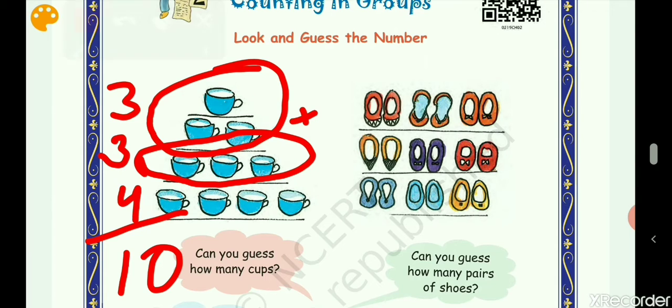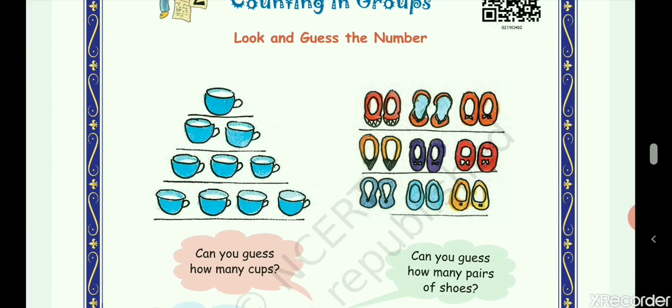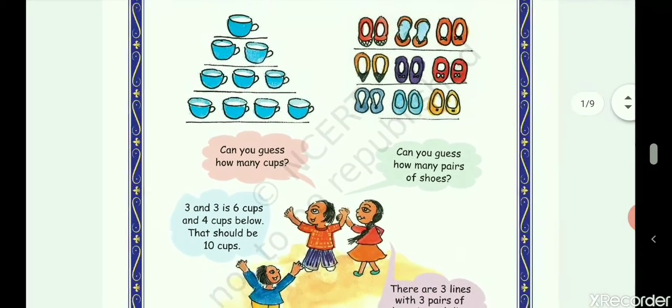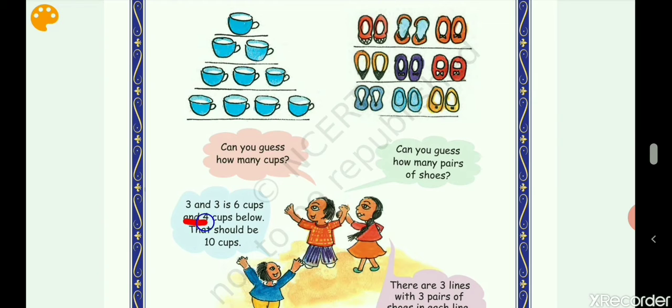On the other side, in this row we have three pairs, here also three pairs, here also three pairs. So we can make three plus three plus three equals nine pairs. Now see what would be the answer of these two activities.